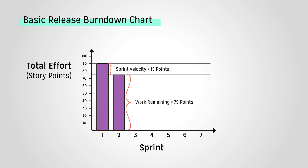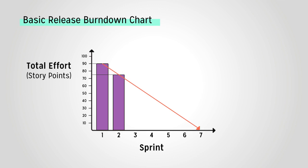Let's say our total effort was 90 story points, and we completed 15 story points in the first sprint. From the release burndown, we can see that our velocity for the sprint was 15 points, and the work remaining is 75 points. We're starting Sprint 2 with 75 story points remaining. If we wanted to predict how many sprints this product will take to complete, we can draw a prediction line through the bars. Based on it, the project should take 6 sprints — not 7, because at the beginning of sprint 7 there would be no story points remaining, meaning you wouldn't need that sprint.